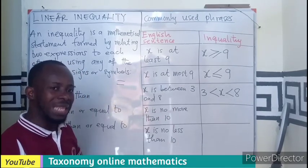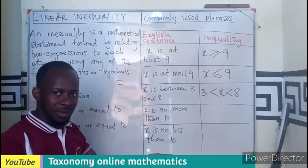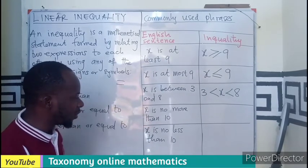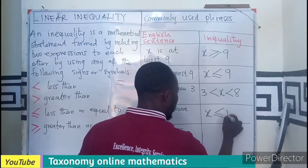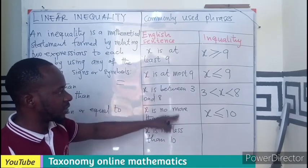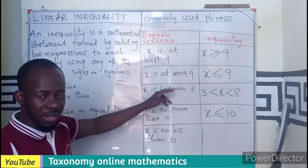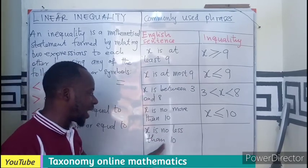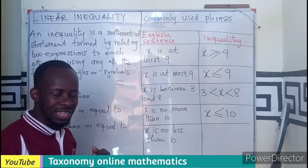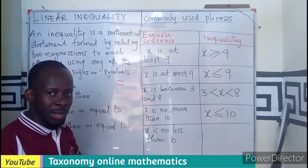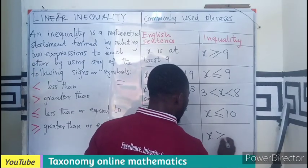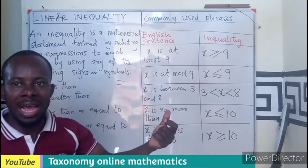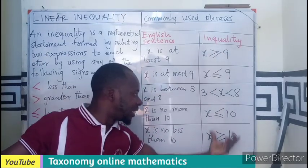If x is 'no more than ten,' it means x is either equal to ten or less than ten, so x is less than or equal to ten. If x is 'no less than ten,' it means x could be ten or more than ten, so x is greater than or equal to ten. You have to listen carefully to the statement before applying the correct sign.